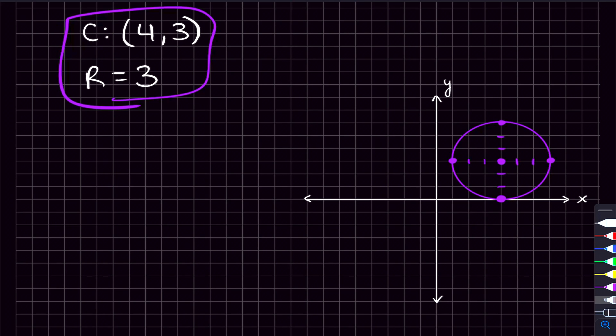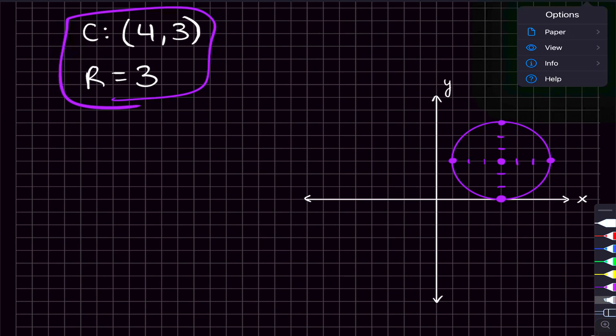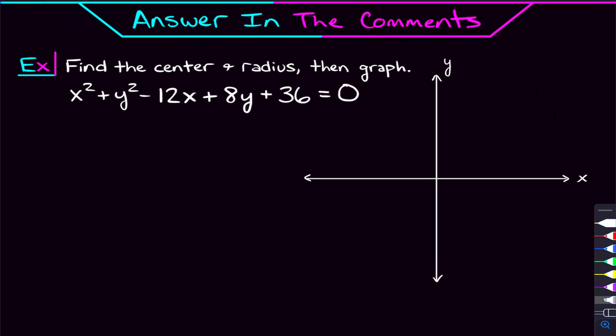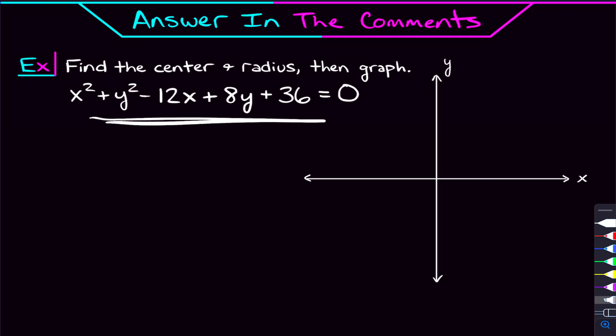That's how to graph circles and write equations of circles in standard form. If you're feeling comfortable, here's a problem to try: find the center and radius of the circle shown and then graph it. You can let me know the center and radius in the comments. Also, I have an extra video in the description where we solve 10 more circle problems, including more completing-the-square problems.